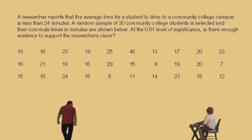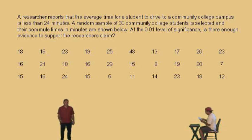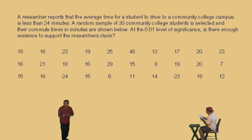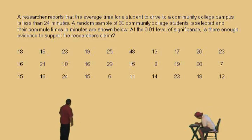Let's go then. There's our first problem right there. A researcher reports that the average time it takes a student to drive to their community college campus is less than 24 minutes. 30 students are then surveyed, and the time it takes them, in minutes, to drive to the campus is recorded. At the alpha equals 0.01 level of significance, is there enough evidence to support the researcher's claim?